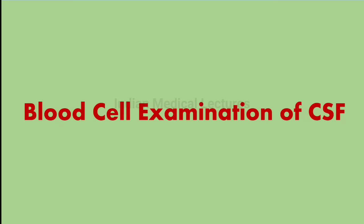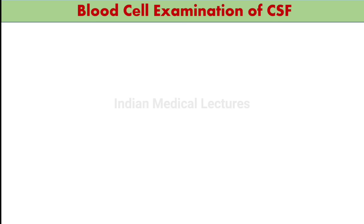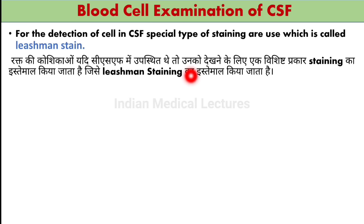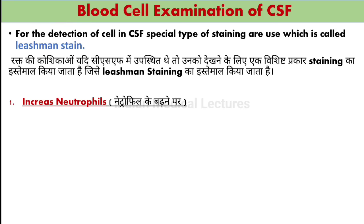Blood cell examination: we look at RBCs, platelets, and other cells present in CSF. For detection of cells in CSF, a special staining called Leishman Stain is used. Leishman staining is a color stain mainly used in blood hematology, and we also use it in CSF to color the cells for examination.